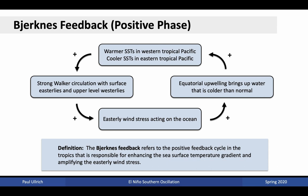This atmosphere-ocean interaction is known as the Bjerknes feedback. The particular phase we have discussed is the positive phase. Under this phase, we obtain warmer sea surface temperatures in the western tropical Pacific and cooler sea surface temperatures in the eastern tropical Pacific. This is driven by easterly wind stress along the equator. Because of warmer sea surface temperatures in the west, we end up generating convection in the west, which drives a strong Walker circulation. The Walker circulation recirculates air across the Pacific — at higher altitudes we have westerly flow, and air blows from west to east and subsides in the central and eastern Pacific. This air then drives easterly wind stress that acts on the ocean.